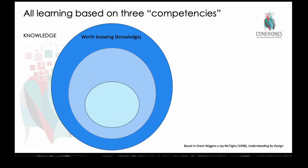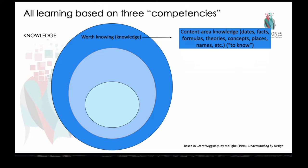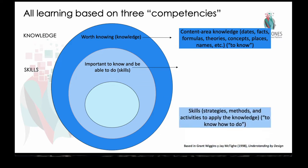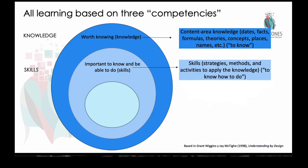Learning is either knowledge-based — dates, facts, figures, formulas, things that are Googleable, things that you can know — or skills, which is the application of that knowledge, being able to use or do something with it. Knowing a formula like A squared plus C squared is one thing, but actually knowing when and how to use it is another — that's a skill set.